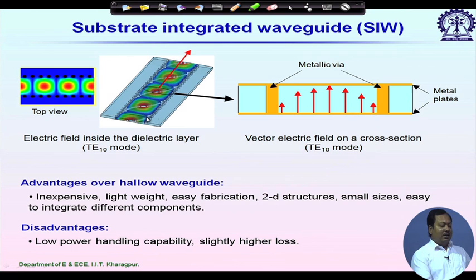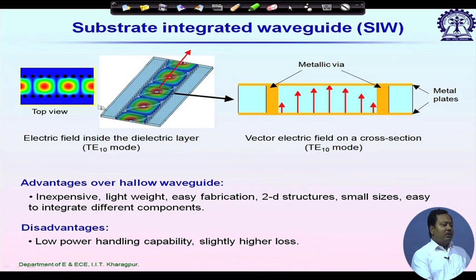Let's look at the direction of the electric field inside SIW. Since it is a synthesized version of the rectangular waveguide in PCB form, we expect TE10 mode. Looking at the electric field strength variation, it resembles TE10 mode — maximum at the center point and minimum on the side walls. Looking at the vector electric field plot on a cross-sectional plane, we have maximum on the central plane and tangential electric field equal to zero on the side walls.